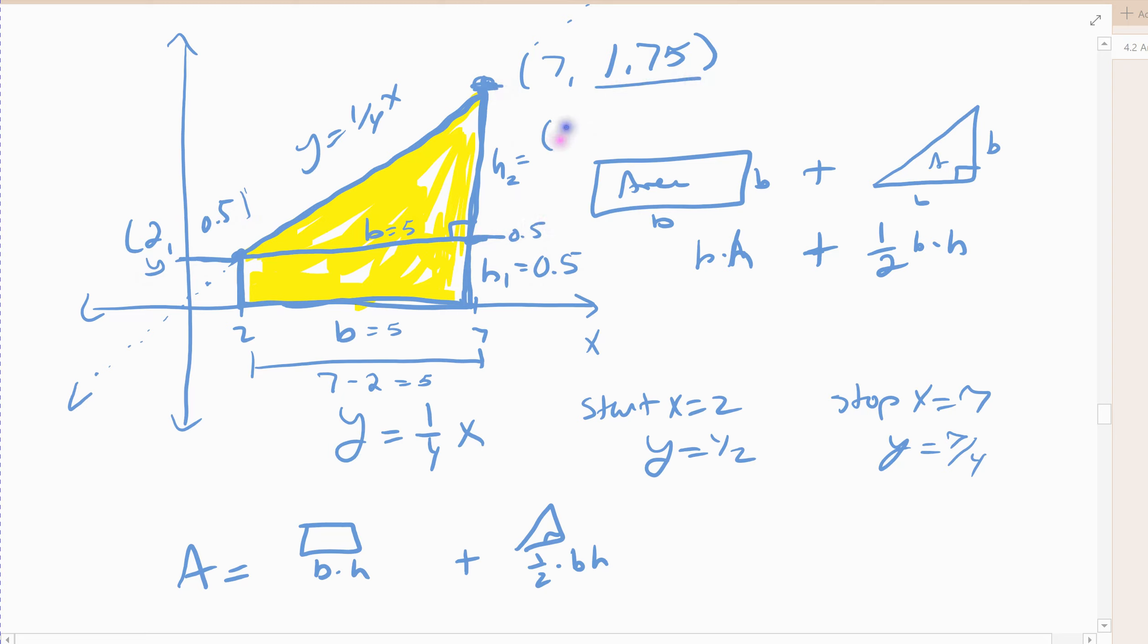Now the height of my triangle is a little harder because it starts at 1 half and it stops at 1.75. And so to find that out, I have to take my 1.75 minus my 1 half, right, because it's this distance here, and so that comes out 1.25. And so that's the height of my triangle.